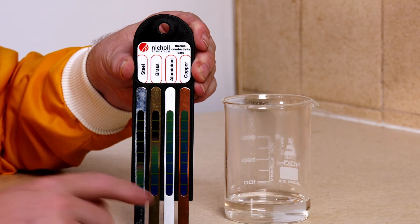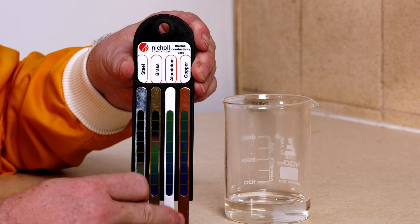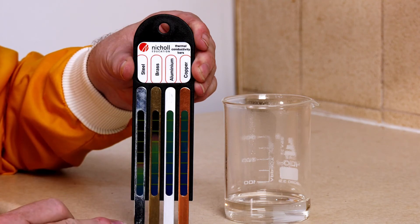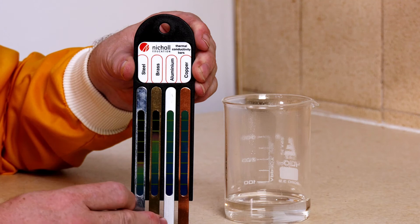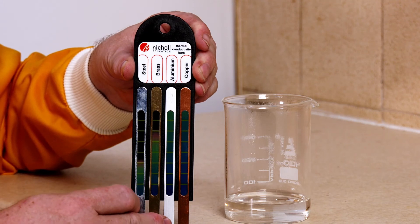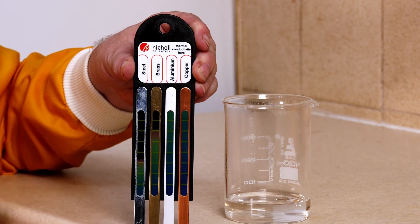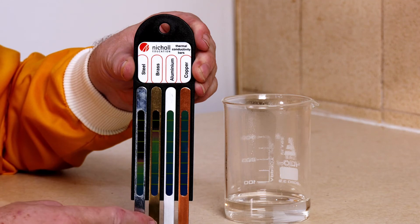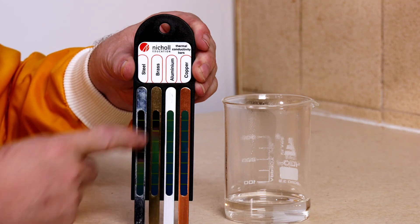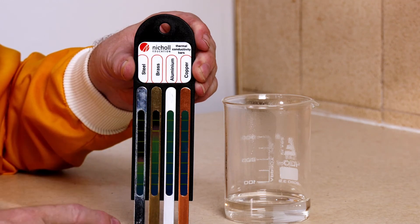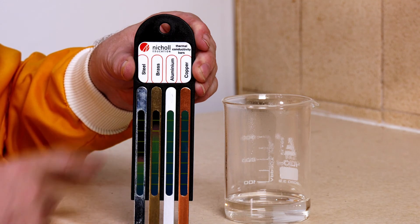So by looking at this, we can see that the copper conducts heat extremely well. Aluminium isn't bad. It conducts heat nearly as well as the copper. The brass is not as good and the steel, not very good at all.